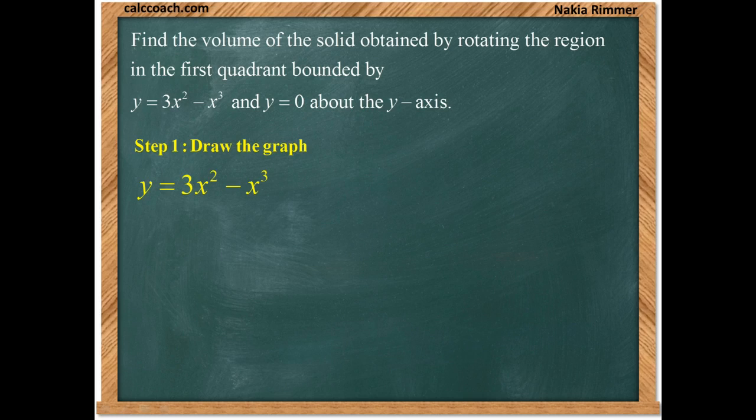The first step in the process is to draw the graph. Now the function y equals 3x squared minus x cubed is a cubic. Usually graphing a cubic is an involved process, but we're saved by the nature of this equation. We do know at least that a cubic would either look like this where it rises going off to the right and falls going off to the left, or it's going to look like this where it rises going off to the left and falls going off to the right.